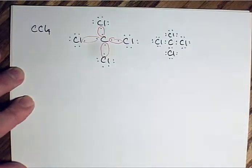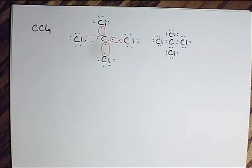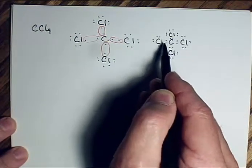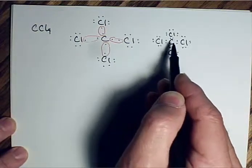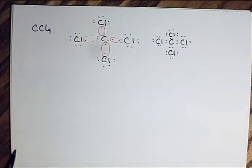And so the result is we get a Lewis dot formula that looks like this. And we could draw a Lewis formula, but we don't really need that to figure out the shape. To figure out the shape, we're going to count the sets of electrons around the atom of interest. Sets can be two electrons, can be four electrons, can be six electrons. In this case, all the electrons we're sharing between the two atoms are sets of two.